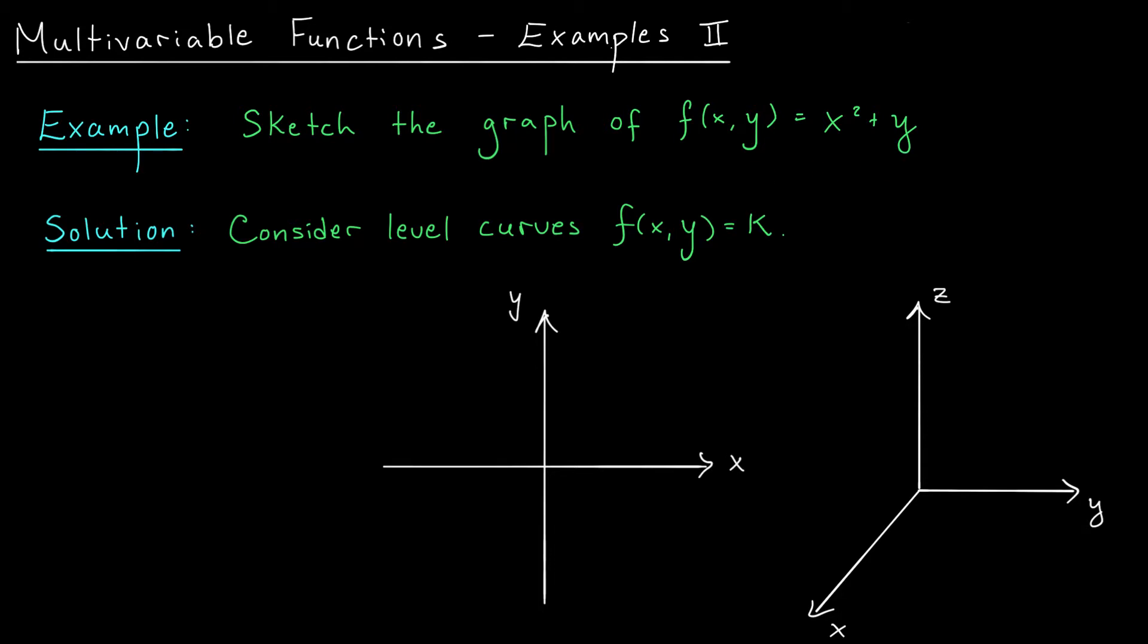Just like before, we're going to be looking at the level curves by setting f(x,y) equal to k. If we do that here, we get x squared plus y equals k. By rearranging this equation, I can write y as a function of x. I have y equals minus x squared plus k.